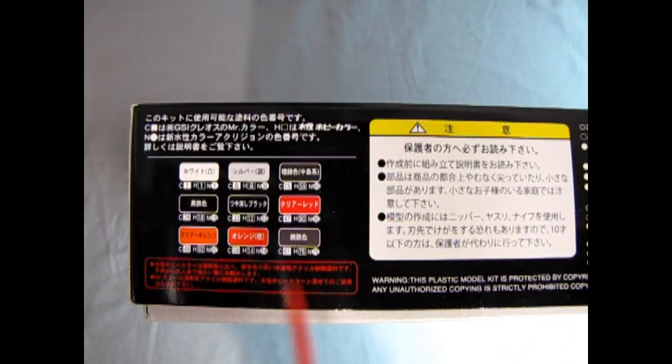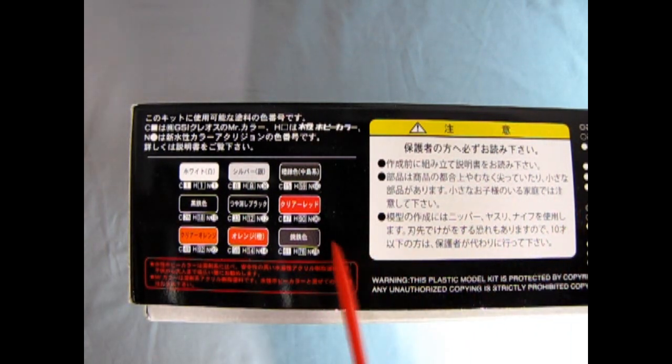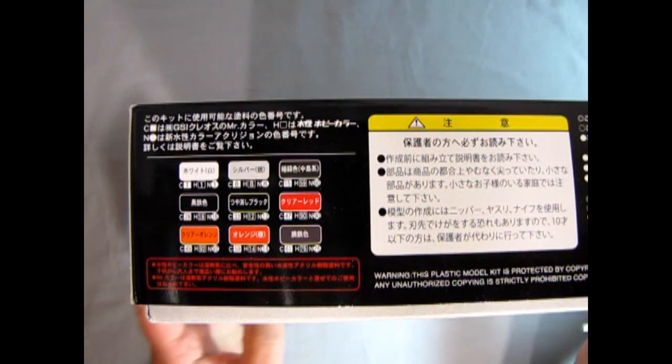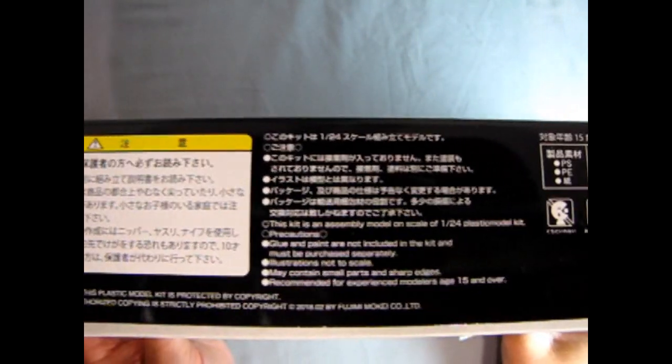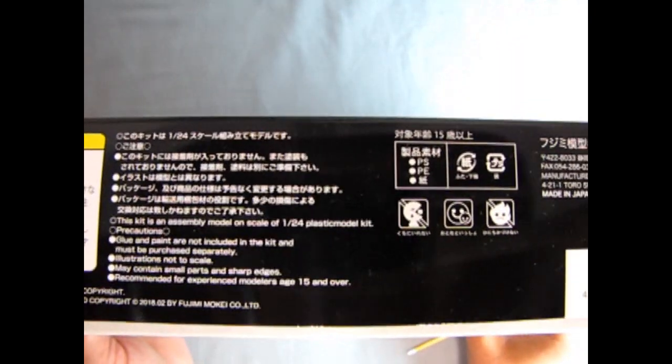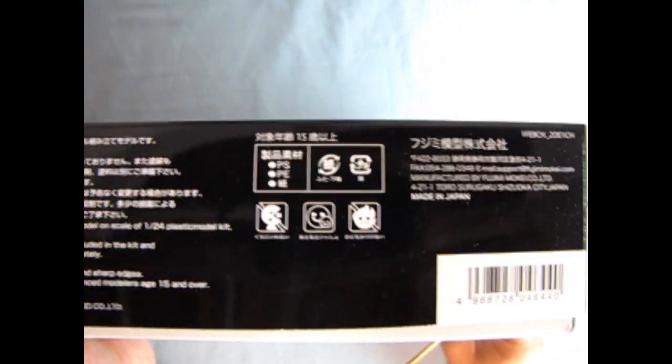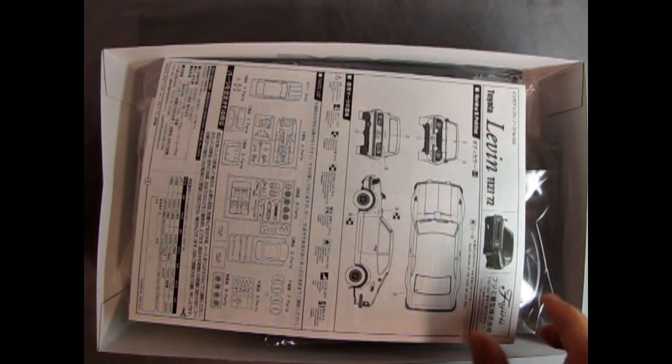On this side of the box, we can see some color call-outs. As well as some information, warning sort of things. And info on the car. However, this is all written in Japanese, so I don't really know what it is saying. Opening up the lid, we can see we've got our instructions right off the top.